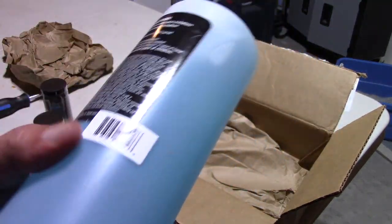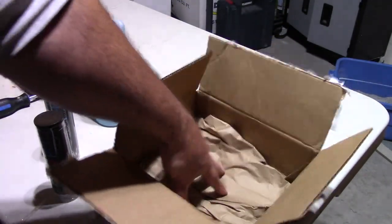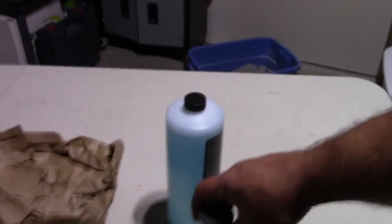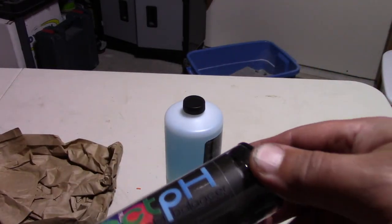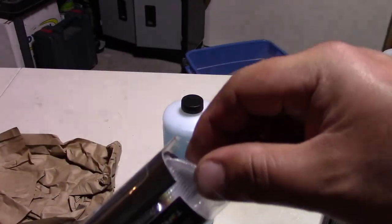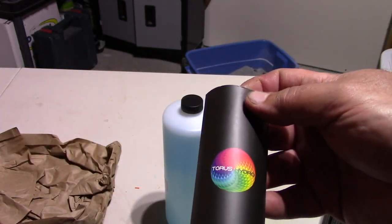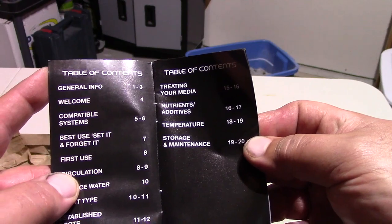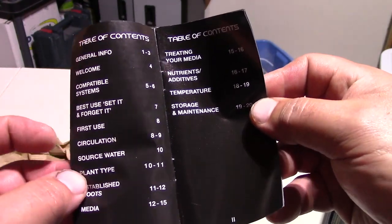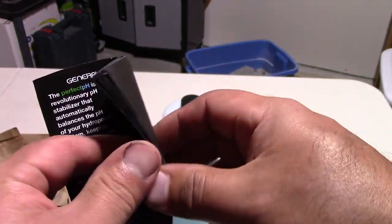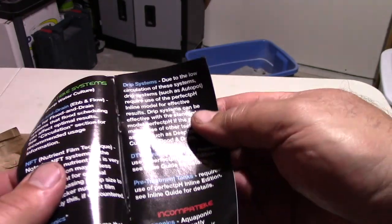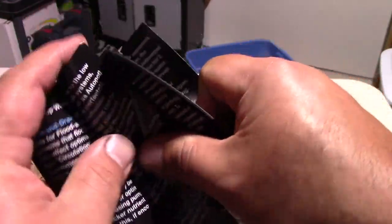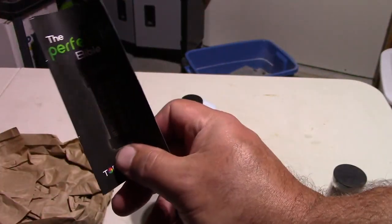And one liter of their recharge liquid. Nothing else in the box, that's it. Let's take the one that's already open, pop this thing open and see what we got inside. Alright, so first things first, there is a little pamphlet here, quite very many pages. Compatible systems, first use, circulation. It's a little bit of a how-to table of contents. I'm going to go through this once I finish the unboxing. It's got a bunch of different styles of hydroponic systems and instruction book in the package.